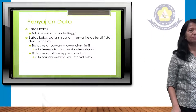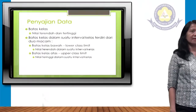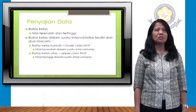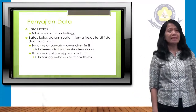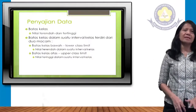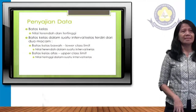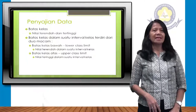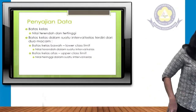Penyajian data — batas kelas adalah nilai terendah dan tertinggi. Untuk batas kelas dalam suatu interval kelas terdiri dari dua macam: batas kelas bawah (lower class limit), yaitu nilai terendah dalam suatu interval kelas; dan batas kelas atas (upper class limit), yaitu nilai tertinggi dalam suatu interval kelas.